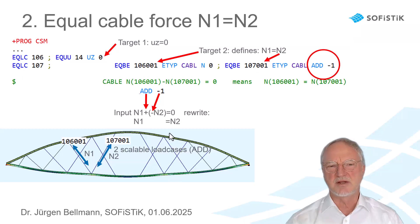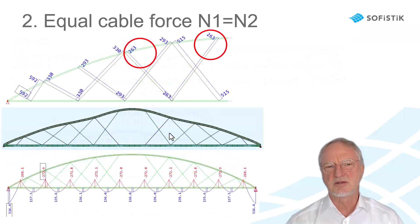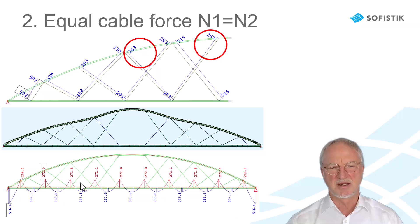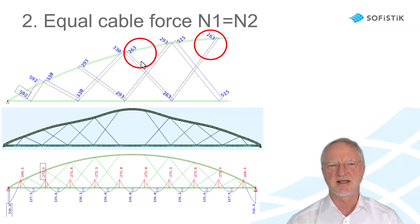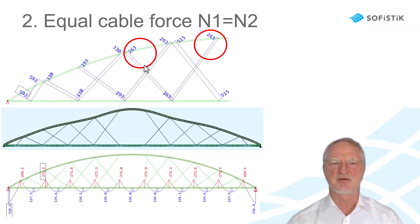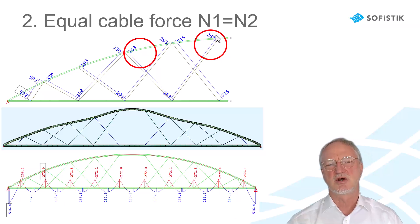If we do so, we get the following result: target reached, bending moment perfect, and we see the cable force in the first cable — 263 — is really the same as in the second cable. So this now looks very perfect.